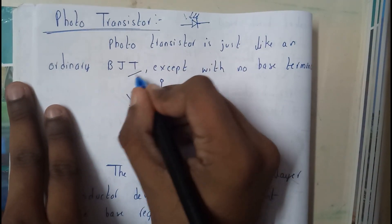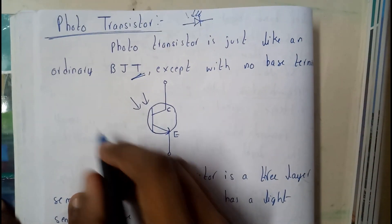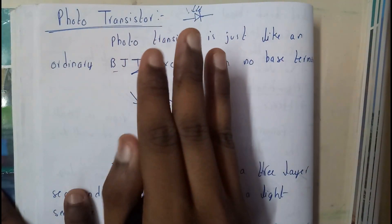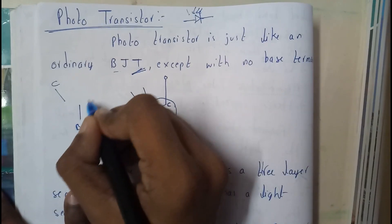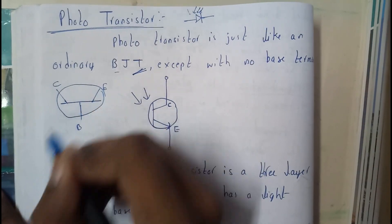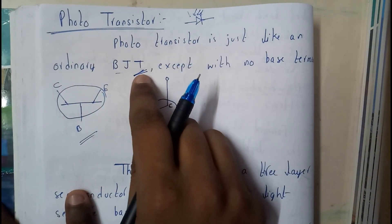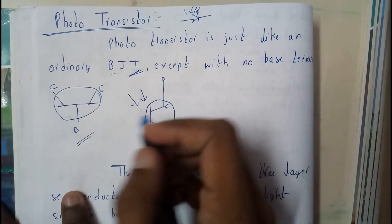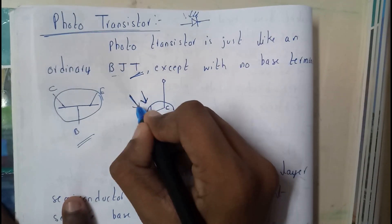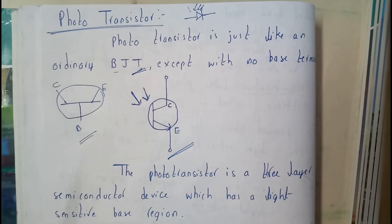...an ordinary BJT — BJT is nothing but a bi-junctional transistor, which will be covered in our second unit. Basically a BJT has three terminals: collector, base, and emitter. The symbol will be like this. Now, a photo transistor is similar to a BJT but without a base terminal. In place of the base, we have light intensity.